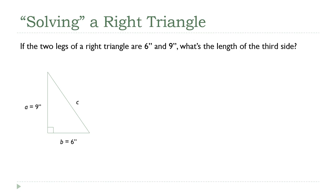We're now ready to go to the formula. We're given information about the sides of a right triangle, and any time I have that kind of scenario, the Pythagorean theorem and its formula are the first things I'm going to go to. The formula, of course, is A squared plus B squared equals C squared.